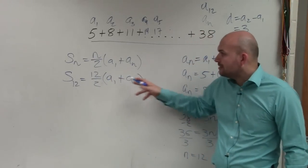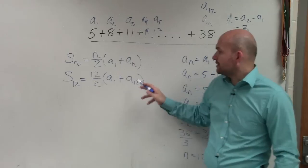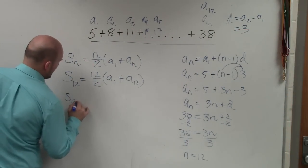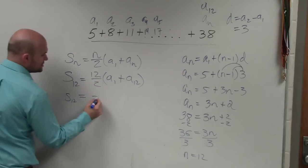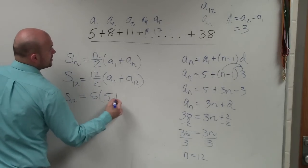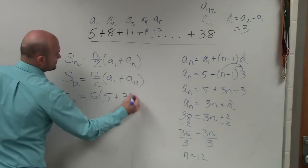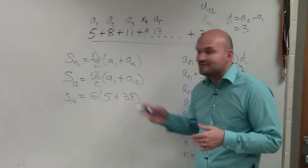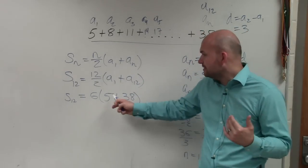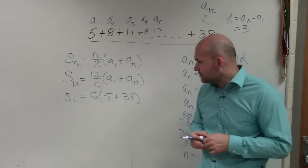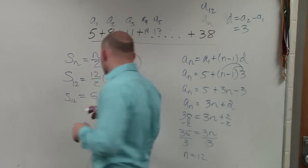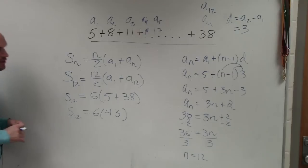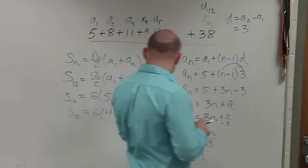So now, do I know what a sub 1 is? 5. Do I know what a sub 12 is? Yeah. So now I do a sub 12 equals 12 divided by 2 is 6, times 5 plus 38. Now, all I simply need to do is, I use my distributed property, 5 plus 38 is going to be 43. And then I go ahead and multiply, which would be 258. If you guys want to check my work, please.